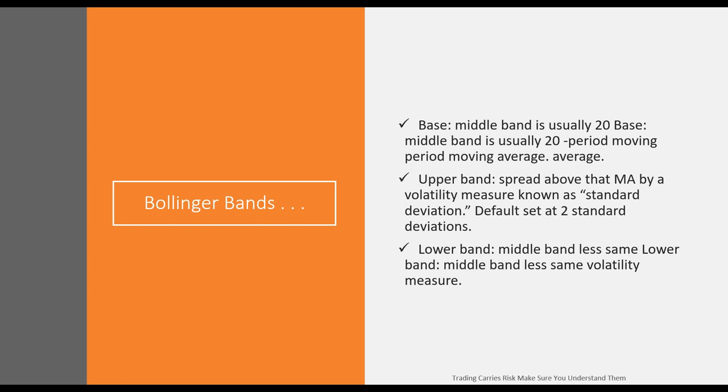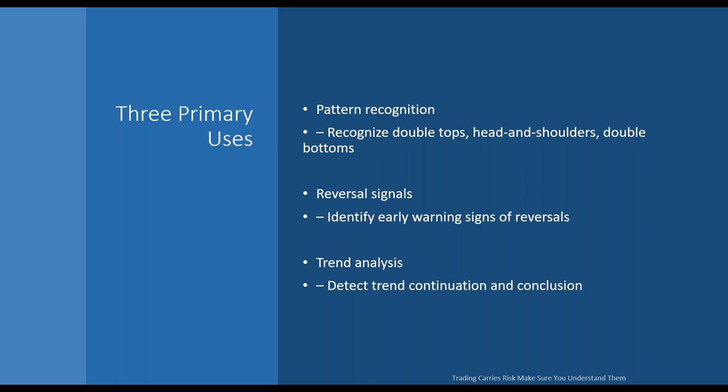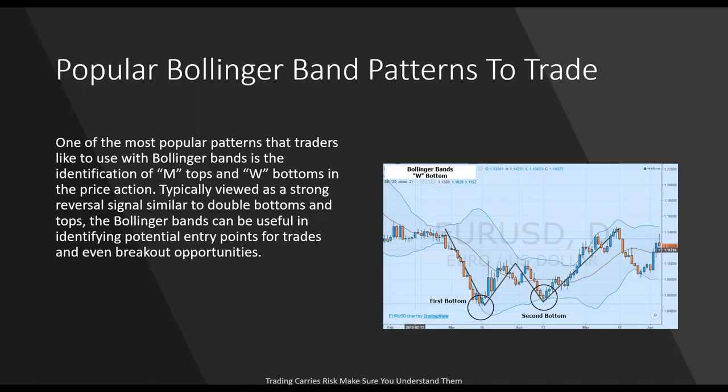For Bollinger Bands, the base middle band is a 20-period moving average, the upper band is plus two standard deviations, and the lower band is minus two standard deviations — and that creates the envelope or band around price. Bollinger Bands can be used for three different types of interpretation: pattern recognition (the M and the W formations), reversal signals, and trend analysis — detecting the continuation or conclusion of a trend.